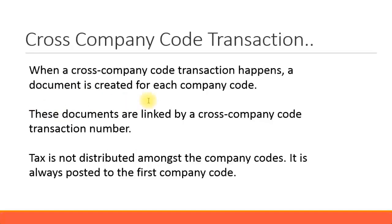In the system, when a cross-company code transaction happens, a document is created for each company code. There will be at least two documents created, one for each company code. These documents are linked by a cross-company code transaction number, which identifies that the two different documents belong to each other.